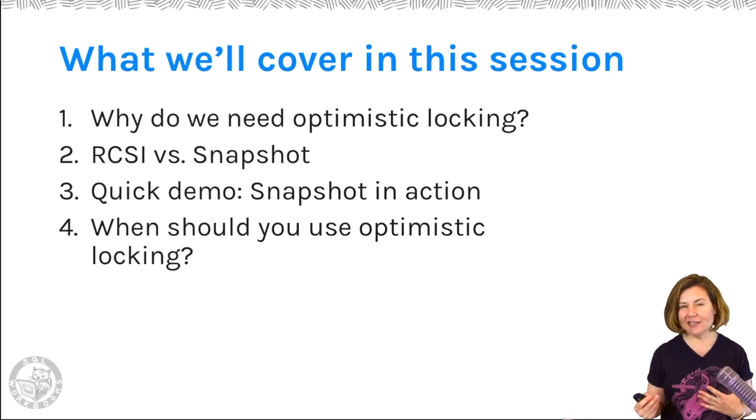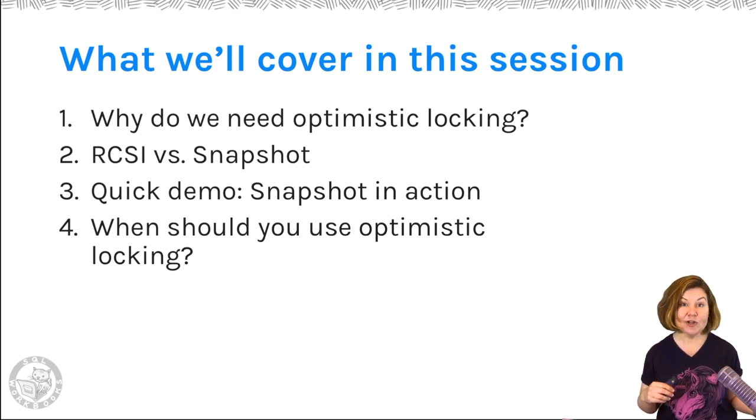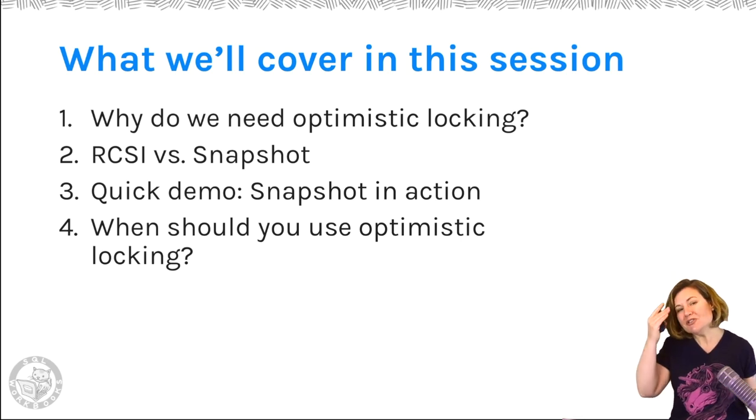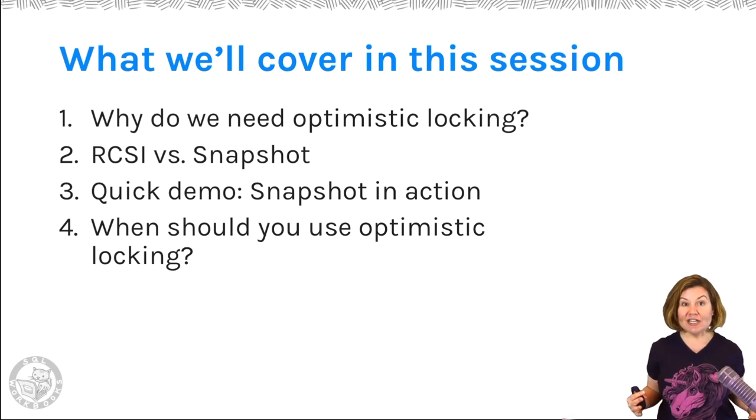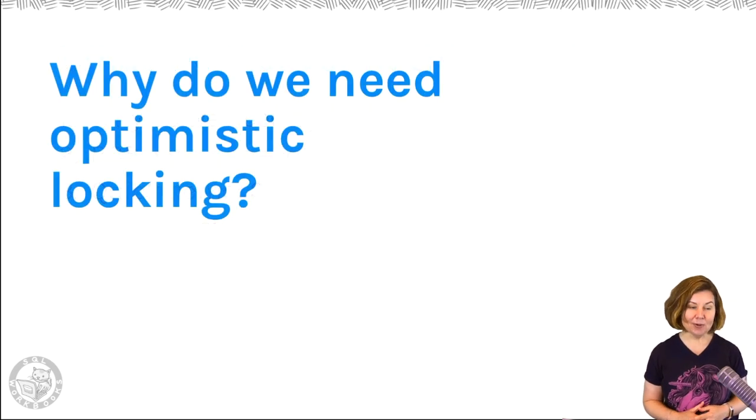These are also known as ways that we can use optimistic locking. We'll talk about what the difference is between these two isolation levels. We'll do a quick demo of snapshot isolation in action, showing how it can solve problems and give you consistent, correct data where read committed can't do that. We'll also talk about different scenarios where you should enable optimistic locking and how to decide if you should enable read committed snapshot isolation, snapshot isolation, or perhaps both.